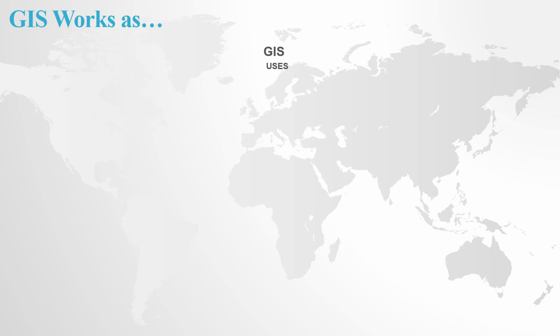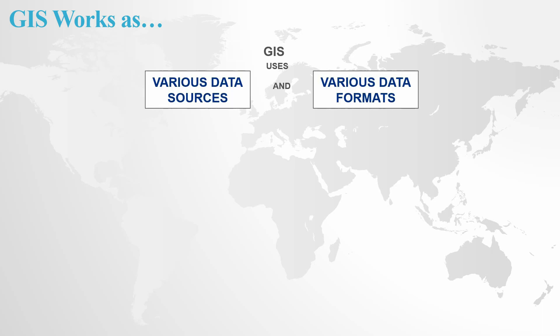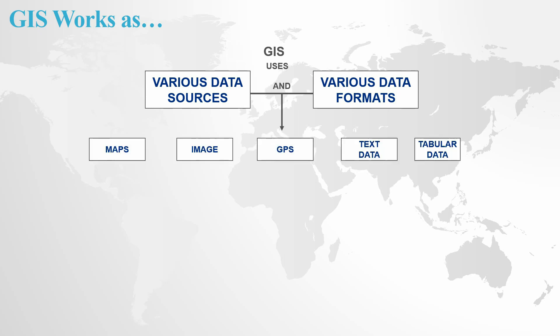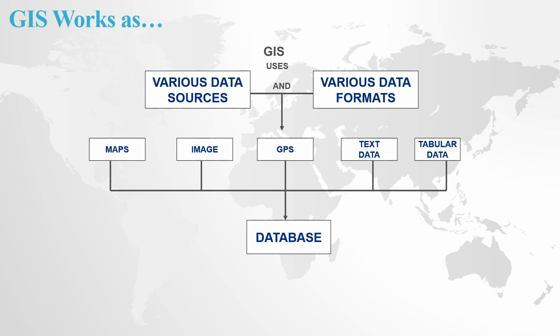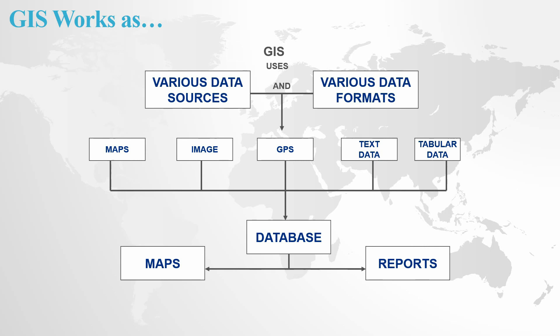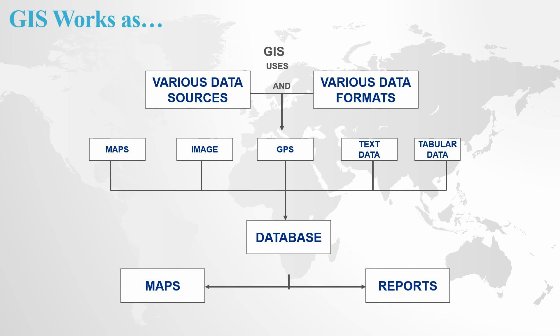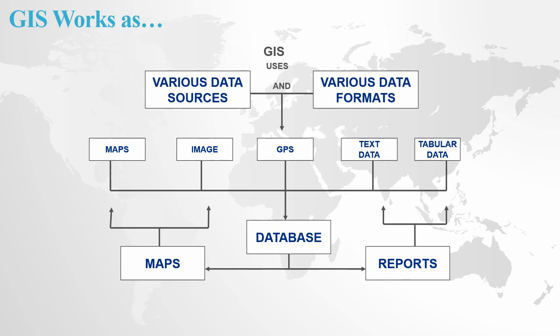In a GIS system, we have the GIS user and GIS interface. There are various data sources and formats — including maps, images, GPS data, text data, and tabular data. These are combined with the database, which produces two types of outputs: maps and reports. Maps and reports are then combined back with various data sources. This concludes our lecture.